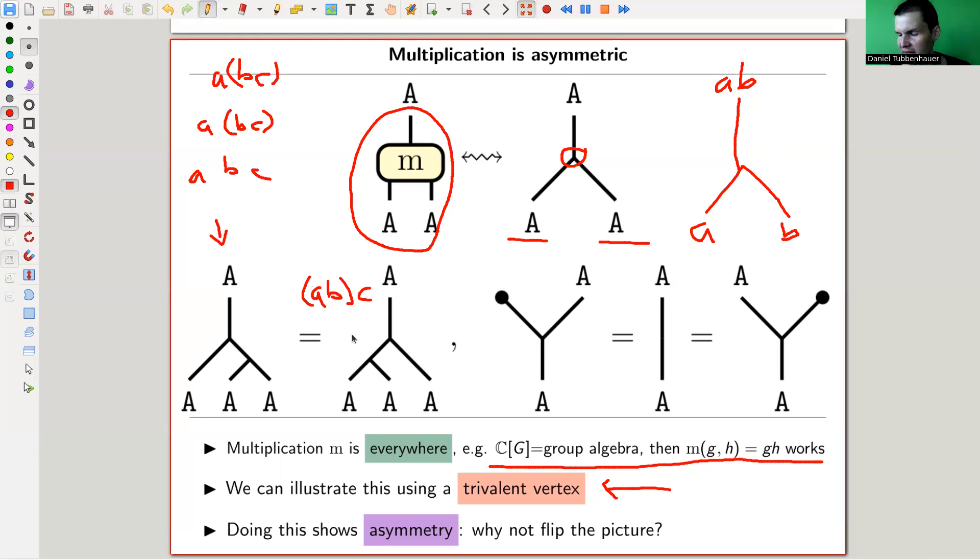So what happens now? Okay, what happens is the following. If I look at the picture, it's nice, it's fine, it's great, but somewhat it's asymmetric. So there was some choice involved. And it's not quite clear to me at this stage why there should be a choice anyway.